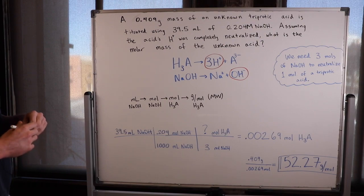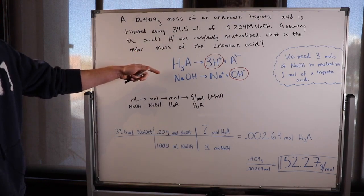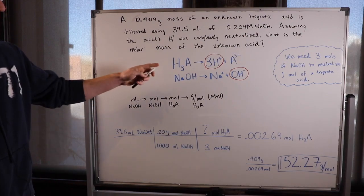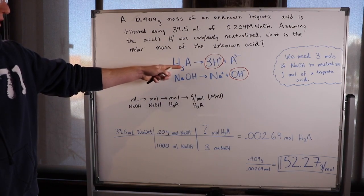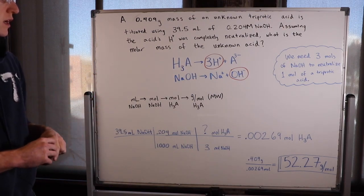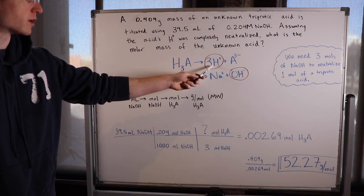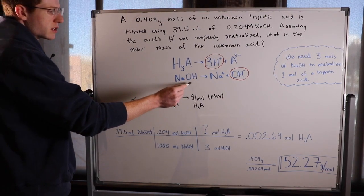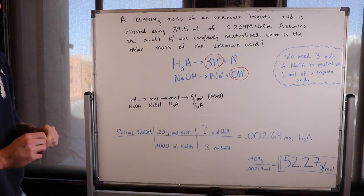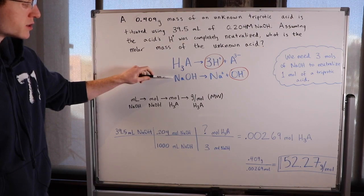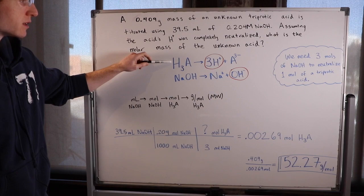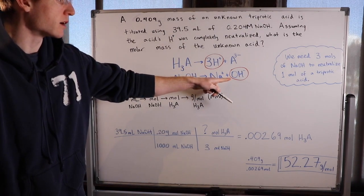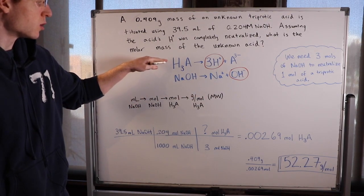In any acid-base neutralization reaction, the first thing to do is write out the acid and base and dissociate them into their ions. A general tri-protic acid is written as H3A — it has three protons to donate, leaving A3- as the counter-ion. NaOH dissociates into Na+ and OH-. We can see that in this problem we need three moles of NaOH to neutralize one mole of this tri-protic acid, because to neutralize three hydrogen ions we need three hydroxide ions.